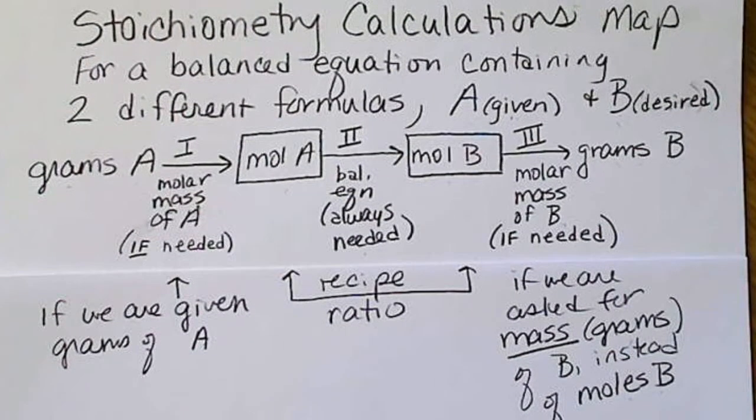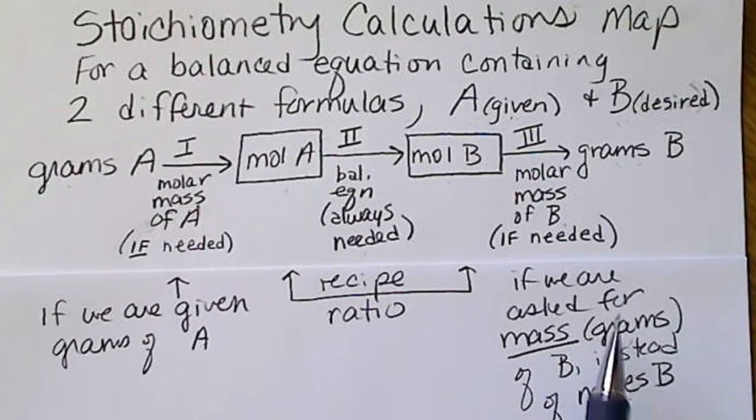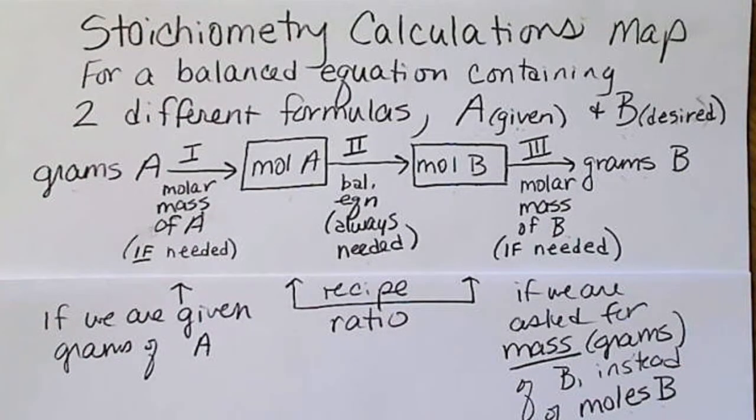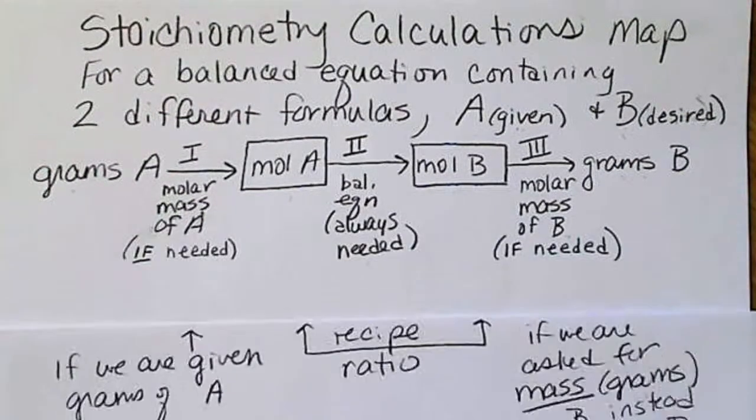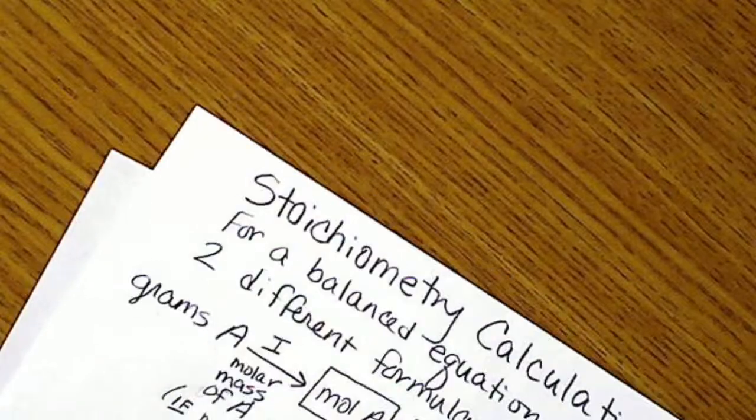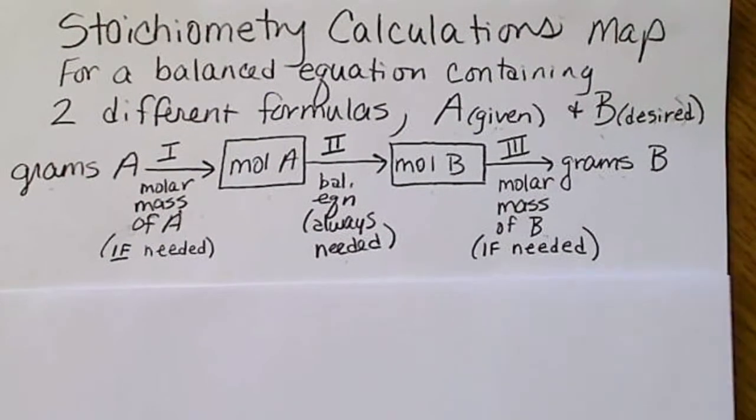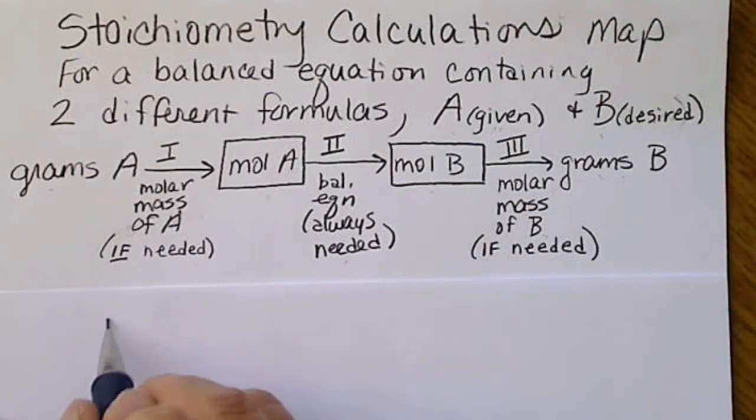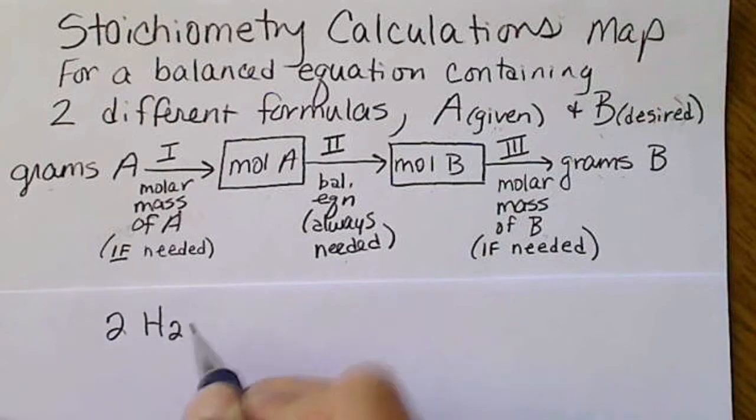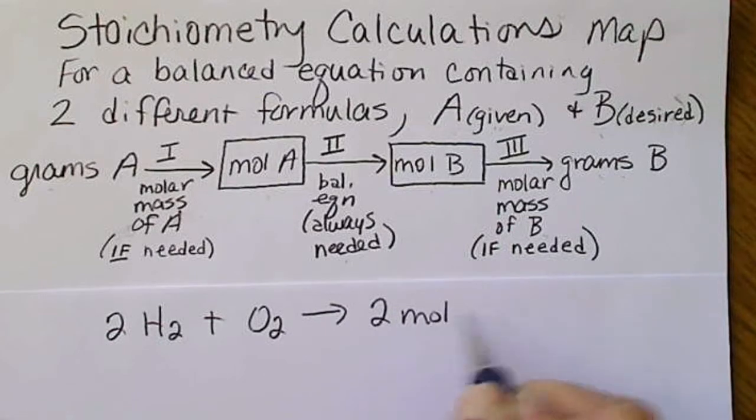So we're going to work some examples of this, and I'm going to go from grams of A all the way to grams of B with this three-step calculation. So for example, if we see this balanced equation, 2 H2 + O2 → 2 H2O.